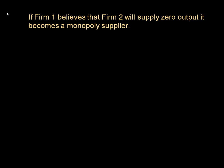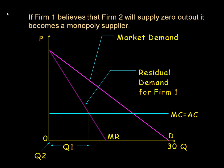Now, what about the alternative? What if firm one believes that firm two will supply nothing? Well, if that is the case, then firm one believes that it will become a monopoly supplier. Again, we can show that on a diagram. This is a traditional monopoly diagram in effect. We have the demand curve and the marginal cost curve, and if firm two produces zero, firm one will maximise its profit by setting marginal cost equal to marginal revenue and supply Q1, which is a monopoly output.